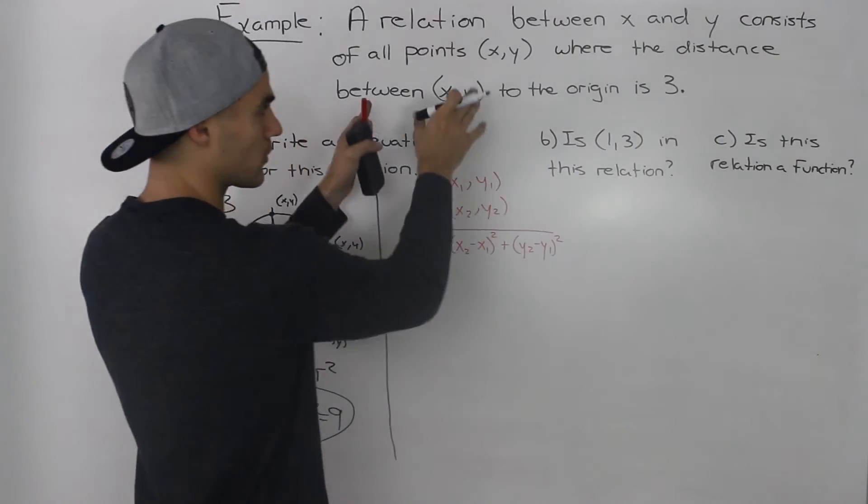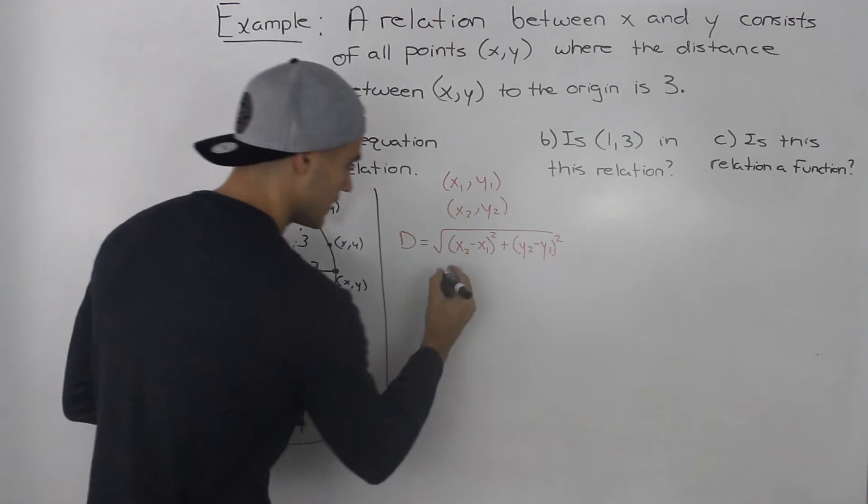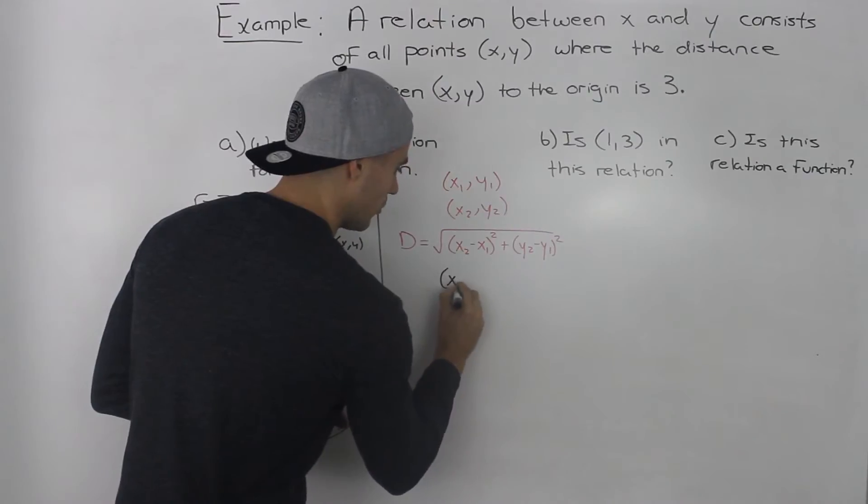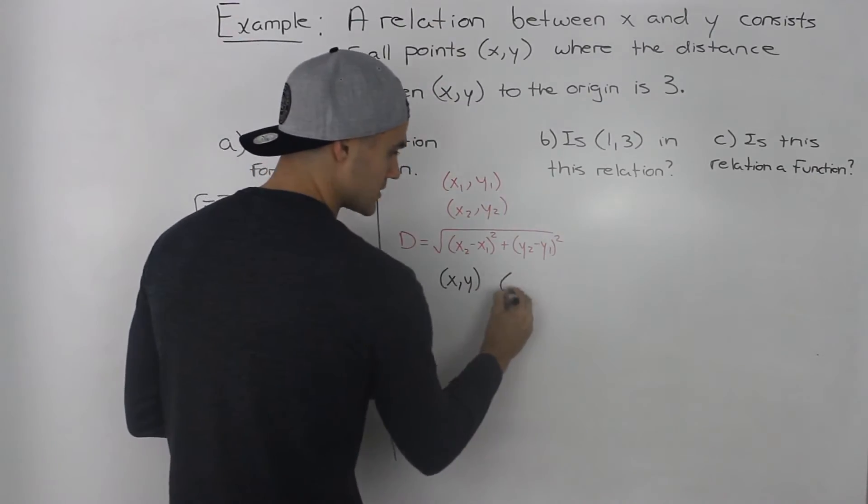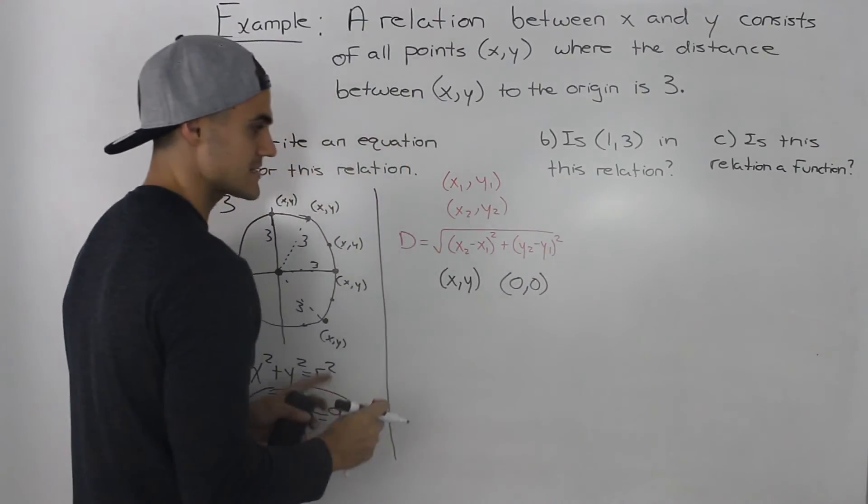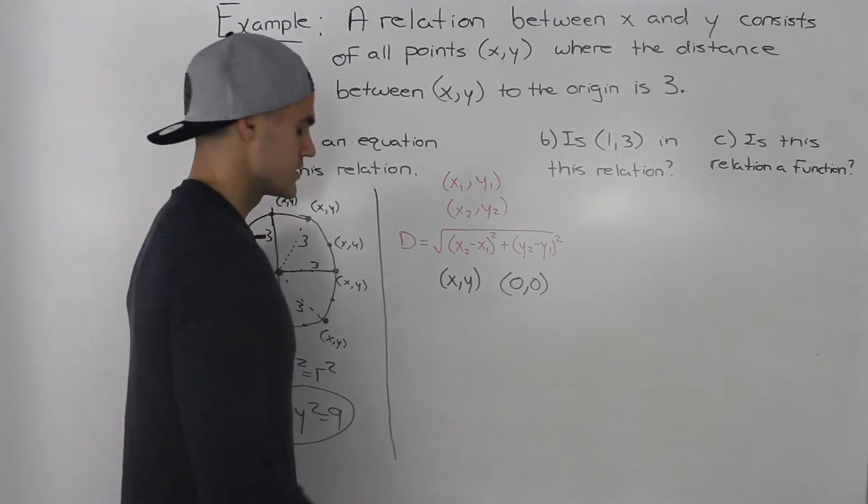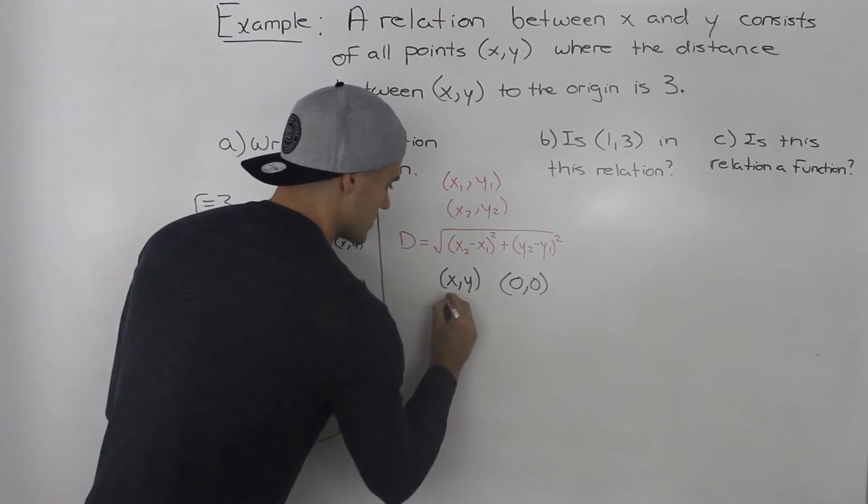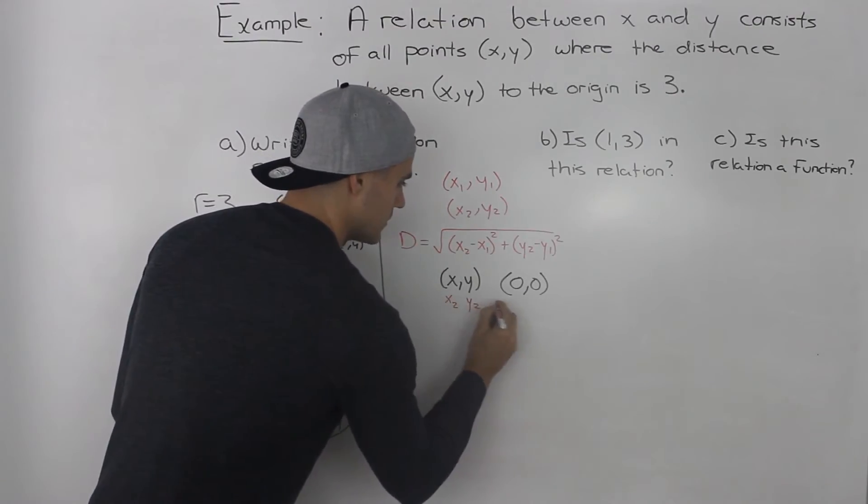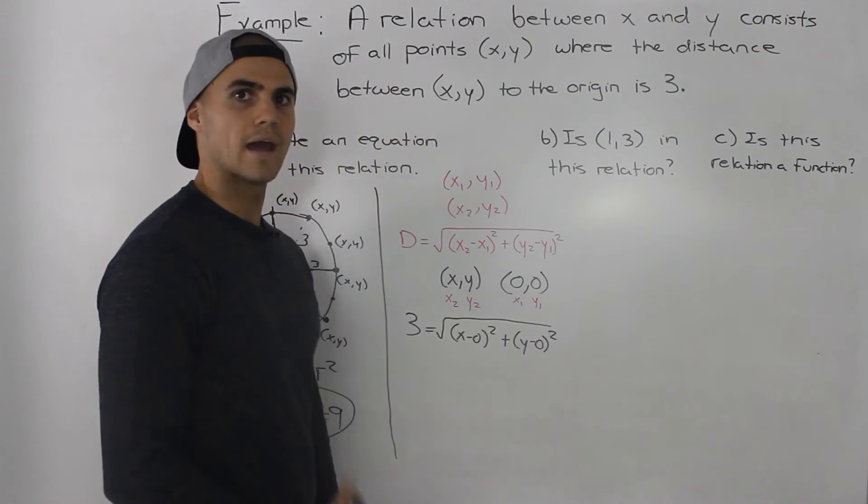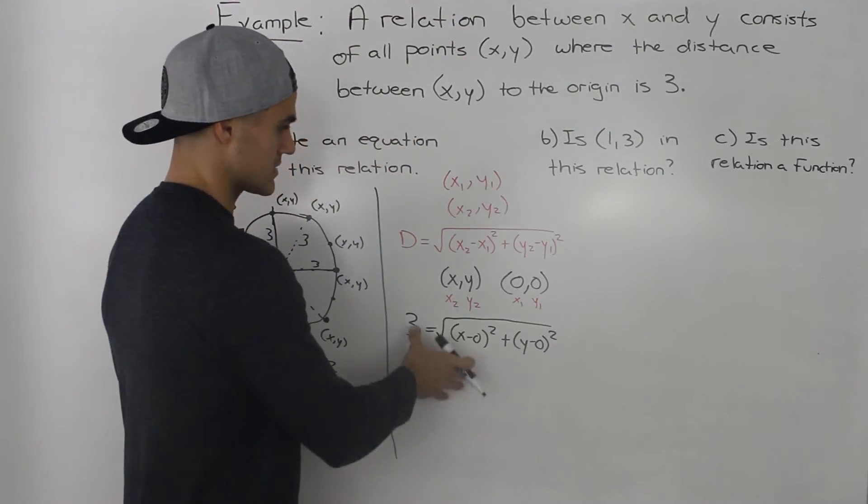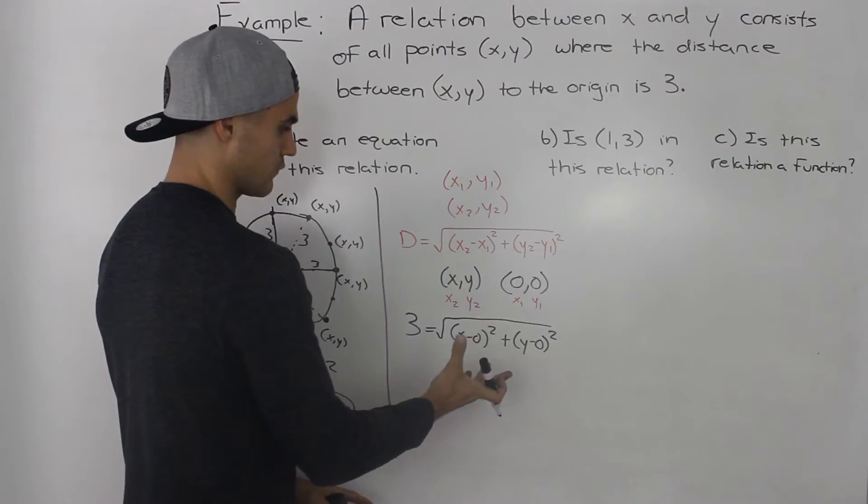And the two points that we're working with in our relation is a general point (x, y) and the distance between (x, y) to the origin (0, 0) has to be 3. So let's label these points here. This can be (x₂, y₂) and this would be (x₁, y₁).